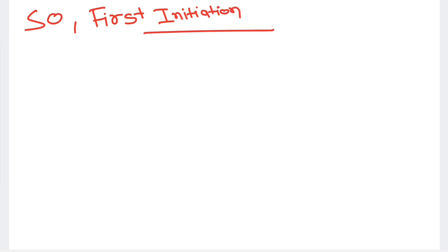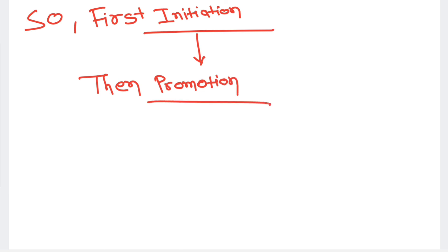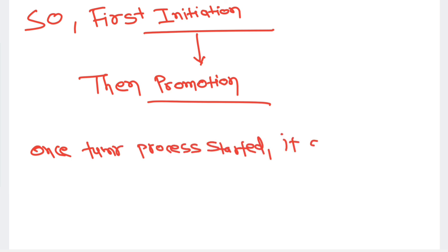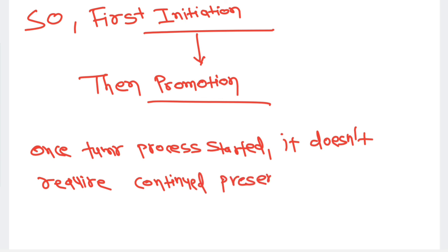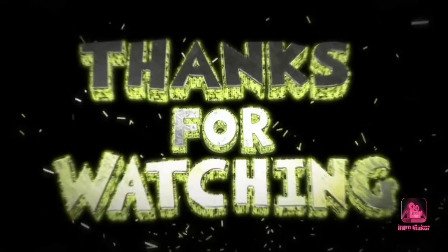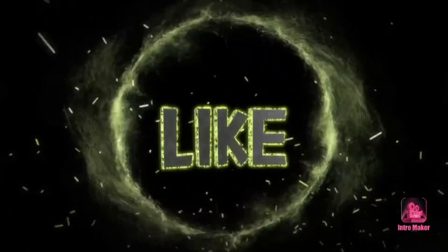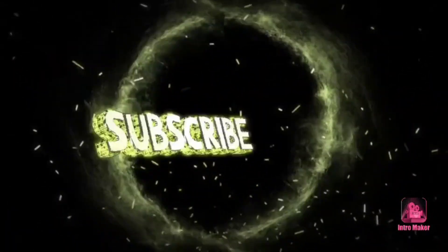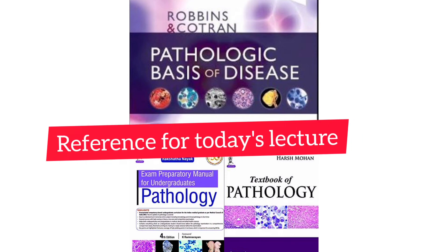In summary, chemical carcinogens first initiate the cell — known as initiation — and then the promotion process begins. There are two steps for cancer development. Once the tumor process starts, it doesn't require the continuous presence of the carcinogen. Once the cell is initiated, it can be promoted to cancer.